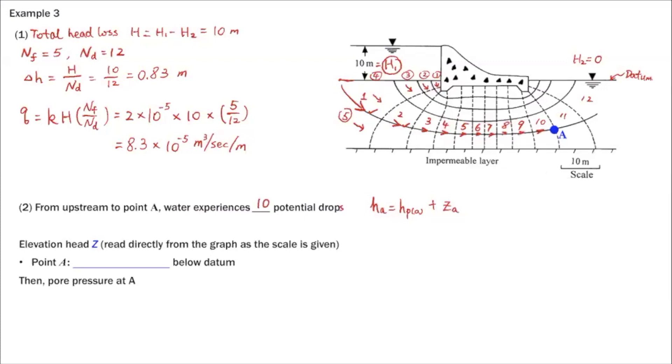Which means the energy water possesses at point A, we call HA. That's the total head is the initial one, which is H1, minus 10 times delta H. So that is 1.7. So this is total head at A. Now let's use capital A here. So it's 1.7 meters above ground surface.